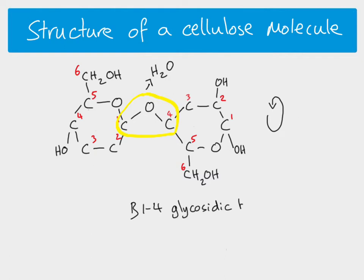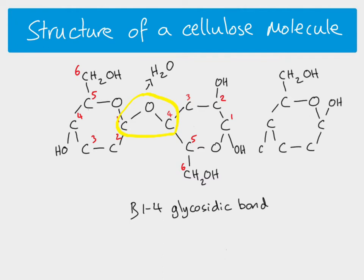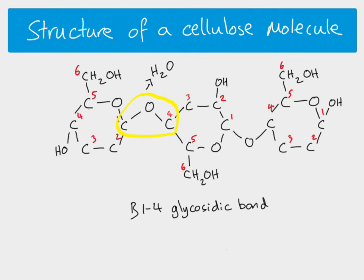We now have a beta 1,4 glycosidic bond joining those two beta glucose molecules — our disaccharide. To make cellulose, we keep doing that over and over again for hundreds or thousands of beta glucose molecules to make a long chain. Every other glucose is inverted or rotated 180 degrees. You can see that one glycosidic bond is above and the next is below, continuing along the chain.